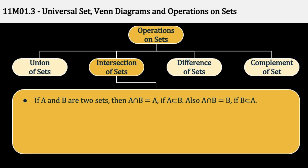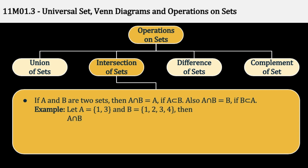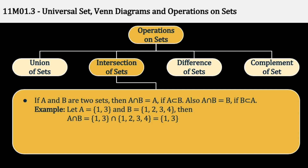If A and B are two sets, then A Intersection B equal to A, if A is a Proper Subset of B; and if B is a Proper Subset of A, तो B हो जाएगा. यहाँ पर Common Elements देख रहे हैं — जो Set छोटा होगा, Proper Subset वाले Case में, वो बन जाएगा हमारा Intersection. Example: A = {1, 3}, B = {1, 2, 3, 4}, then A Intersection B हो गया {1, 3}. यहाँ पर A is a Proper Subset of B है, तो हम देख सकते हैं Intersection B, A के बराबर ही आ रहा है.